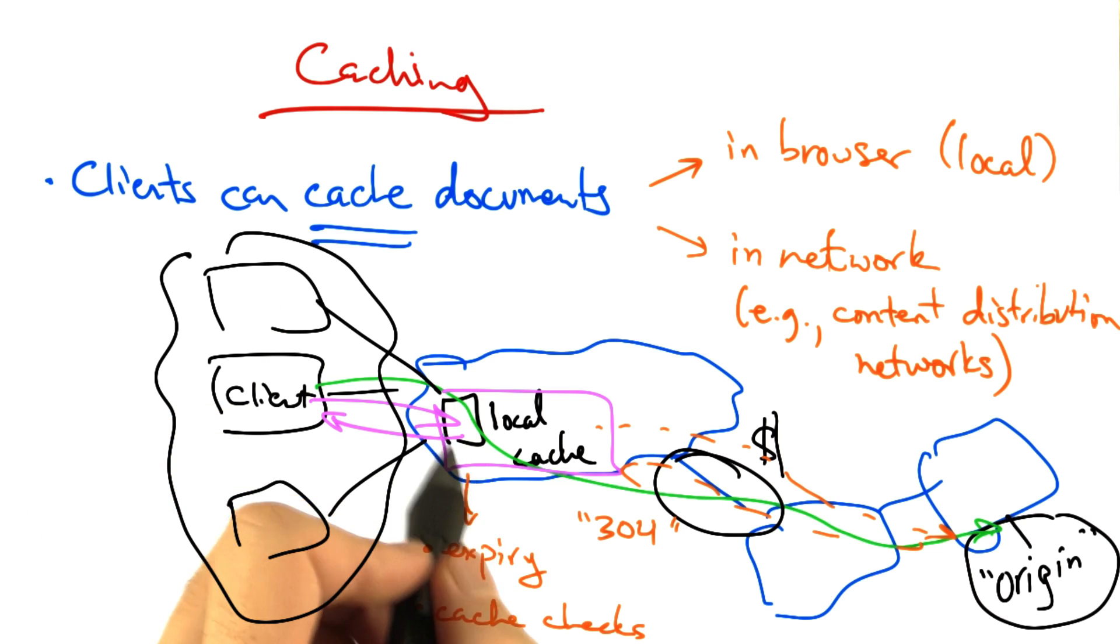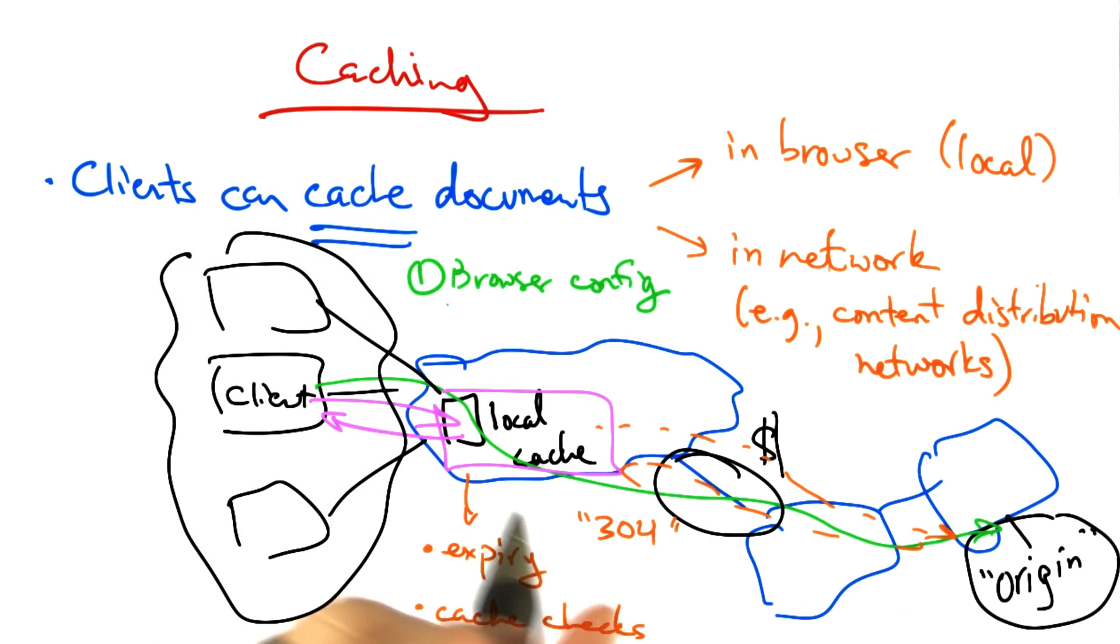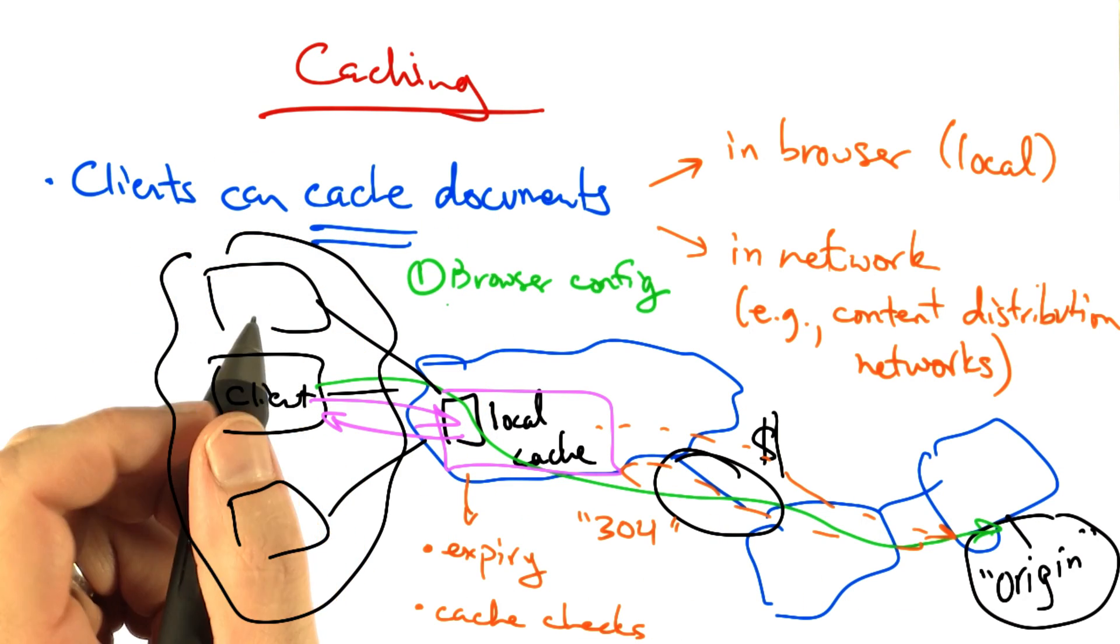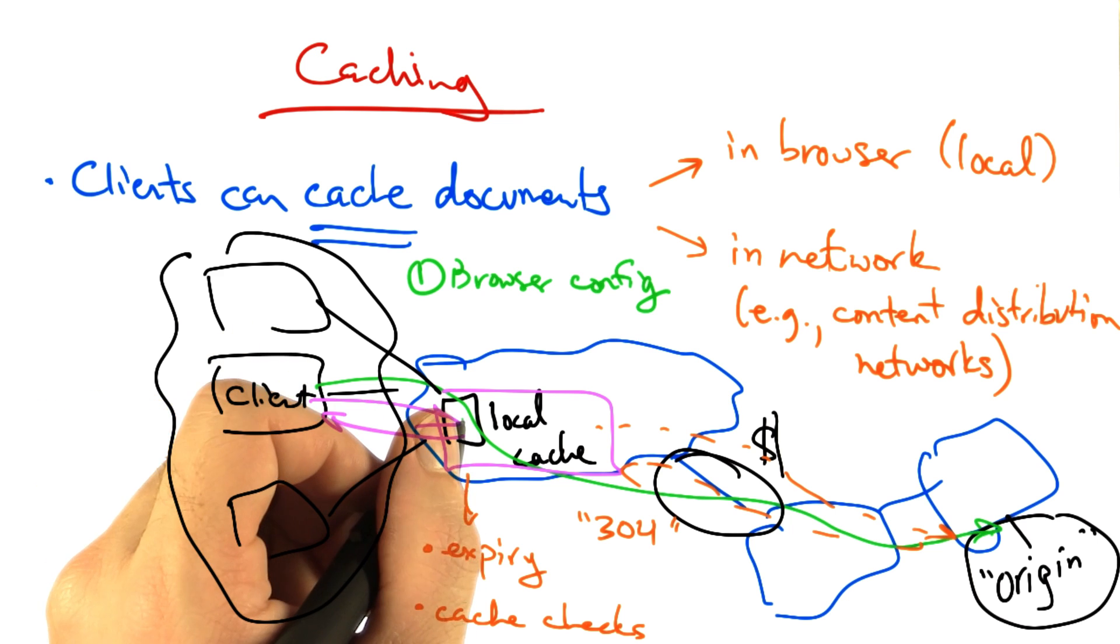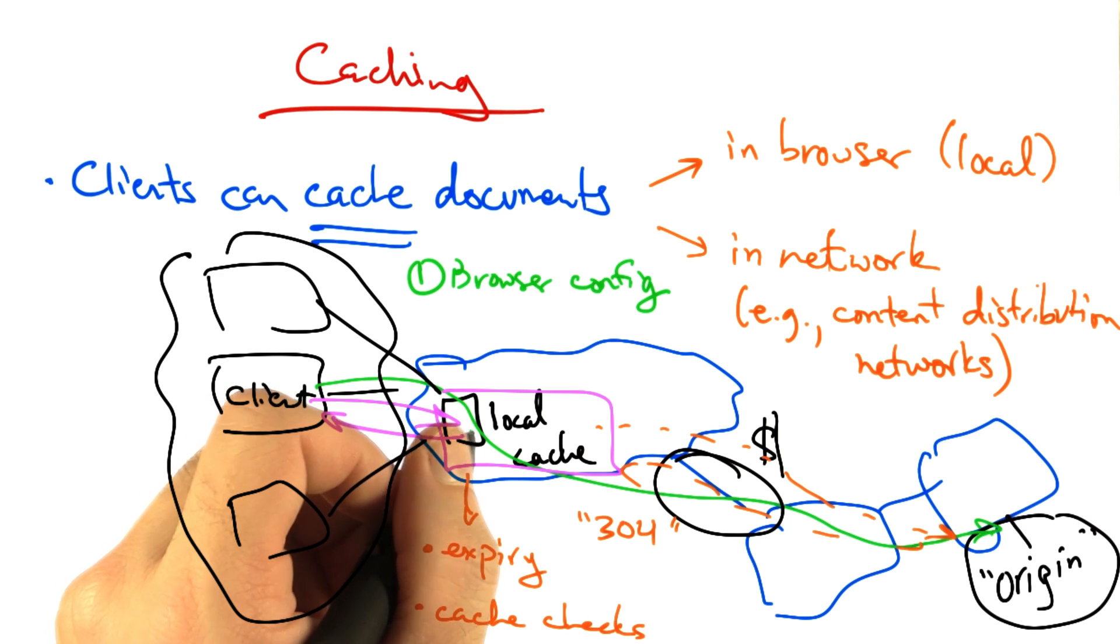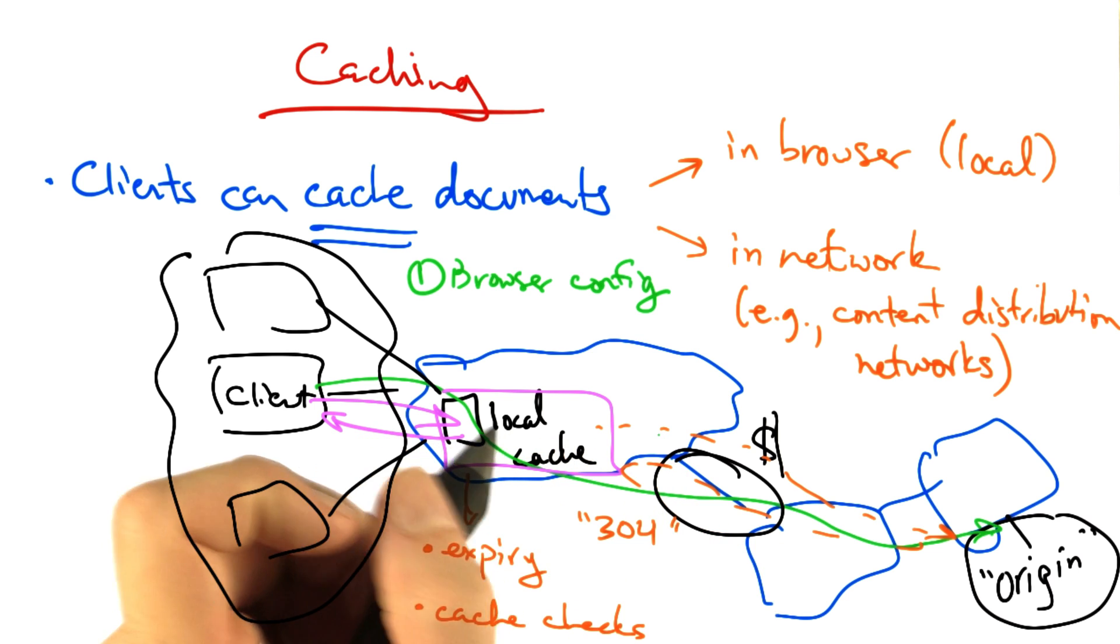Clients can be directed to a cache in multiple ways. One is with browser configuration. You can open your browser and explicitly configure it to point to a local cache, so that all HTTP requests first are directed through the local cache before the request is forwarded to the origin.